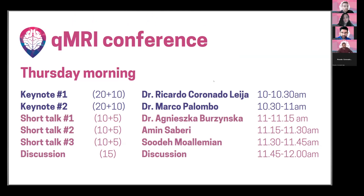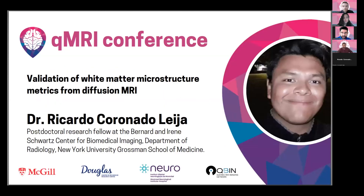The first talk will be given by Dr. Riccardo Coronado Leia, a postdoctoral research fellow at the Bernard and Irene Schwartz Center for Biomedical Imaging, Department of Radiology at New York University Grossman School of Medicine. He holds a master's degree in computer science and industrial mathematics, and a PhD in computer science from the Center of Research in Mathematics in Mexico. His current work focuses on characterization of brain white matter microstructure in neurodegenerative diseases using diffusion MRI, validating with histology and Monte Carlo simulation. Today he will be talking about the validation of white matter microstructure metrics from diffusion MRI.